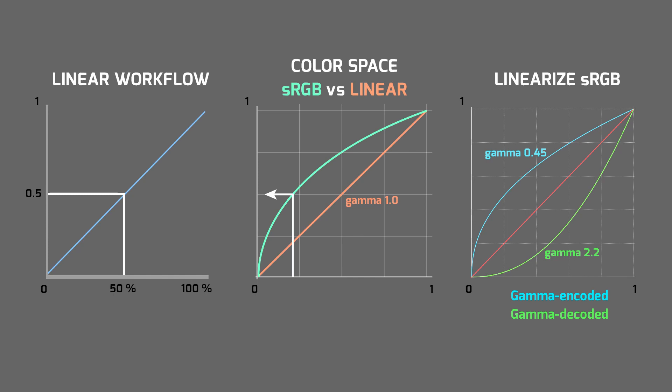My recommendation is to use mainly gamma overrides in the texture node instead of gamma color correction 2.2. I am using gamma color correction 2.2 mainly for better visibility of where we need linearization and where we don't, and it also shows a second option for handling color-based nodes which don't contain a gamma override option.